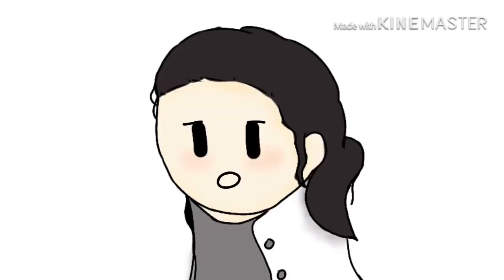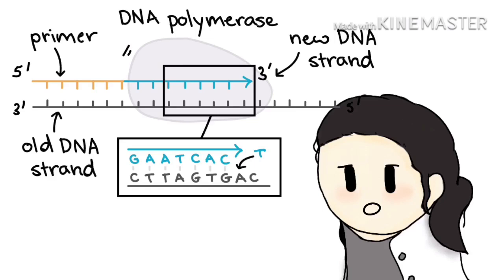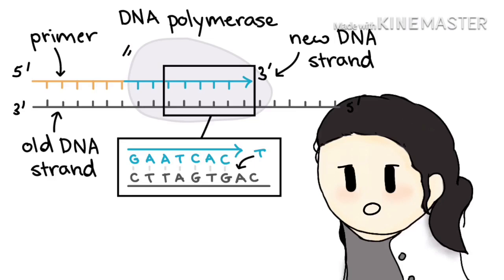Termination. After elongation is complete, two new double helices have replaced the original helix. During termination, the last primer sequence must be removed from the end of the lagging strand. This last portion of the lagging strand is the telomere section. Enzymes snip off a telomere at the end of each replication.